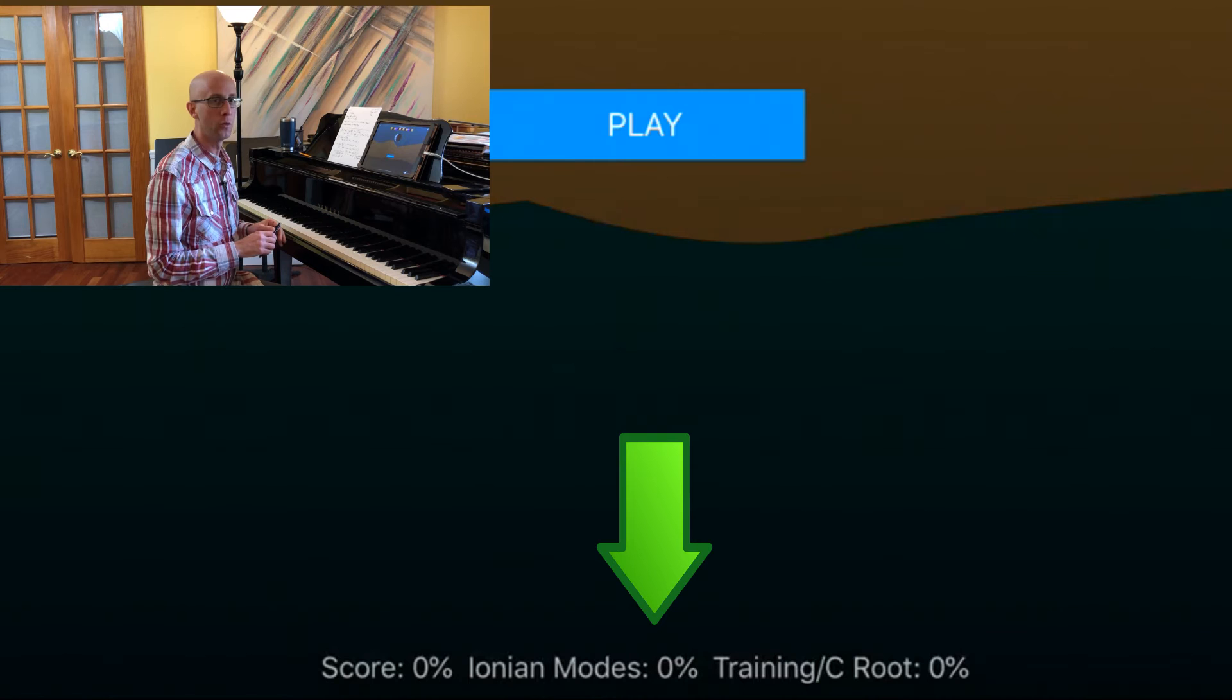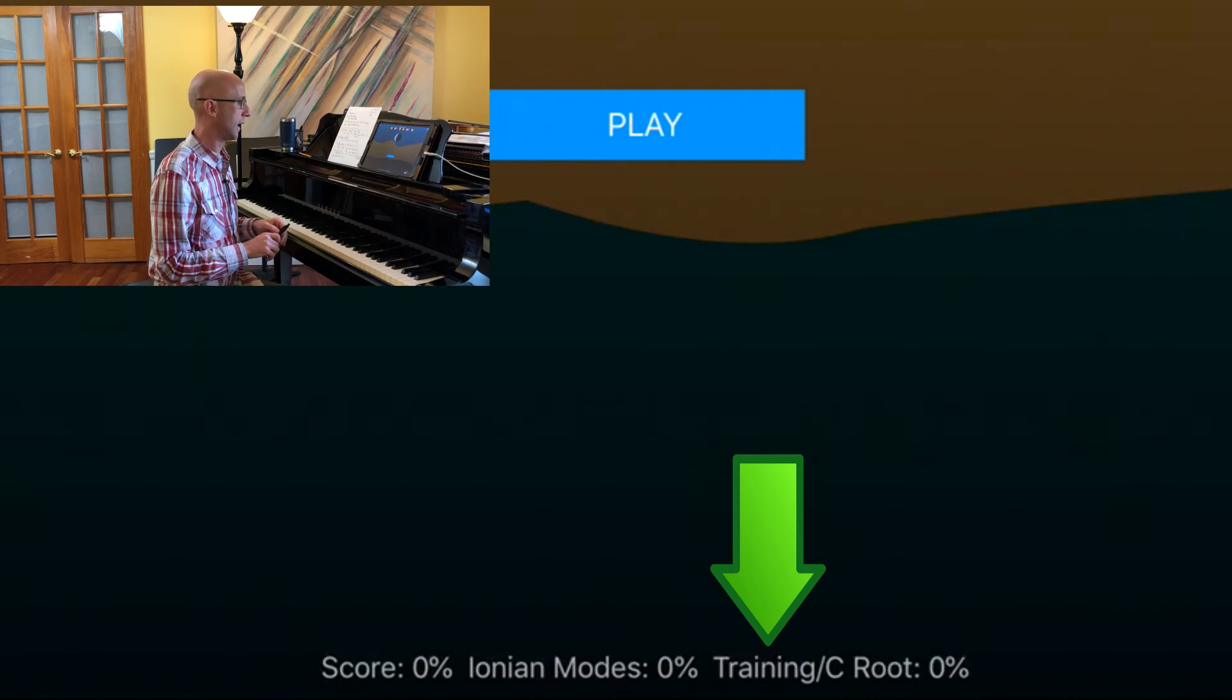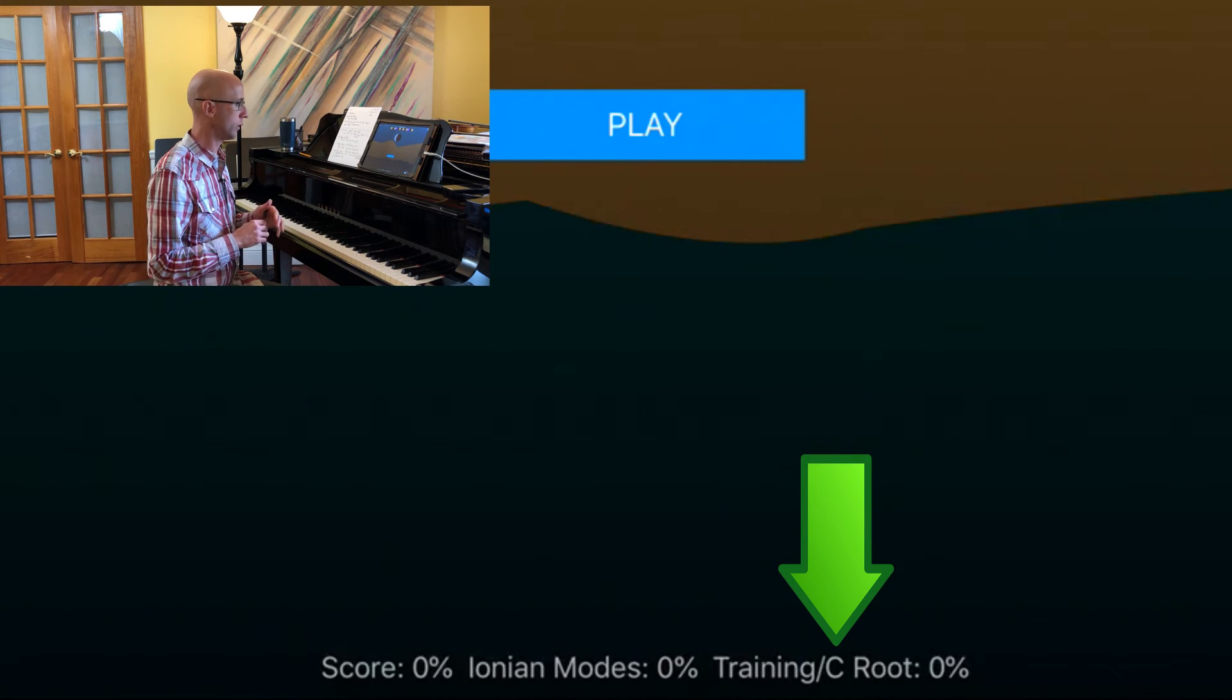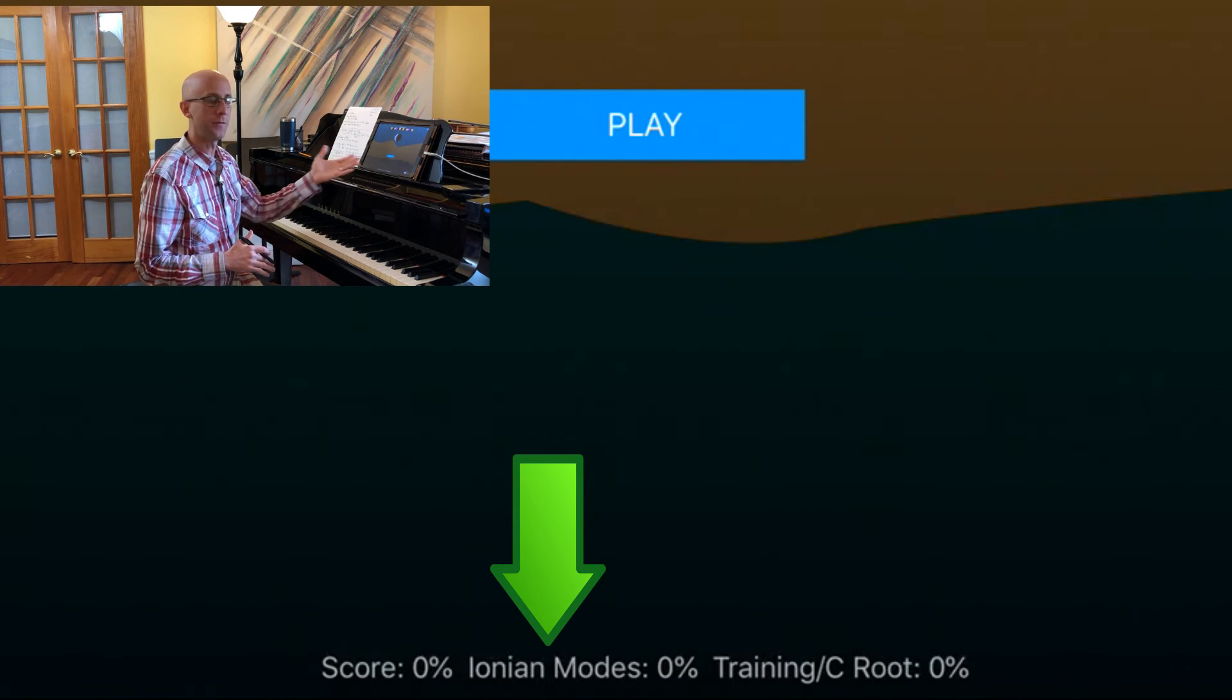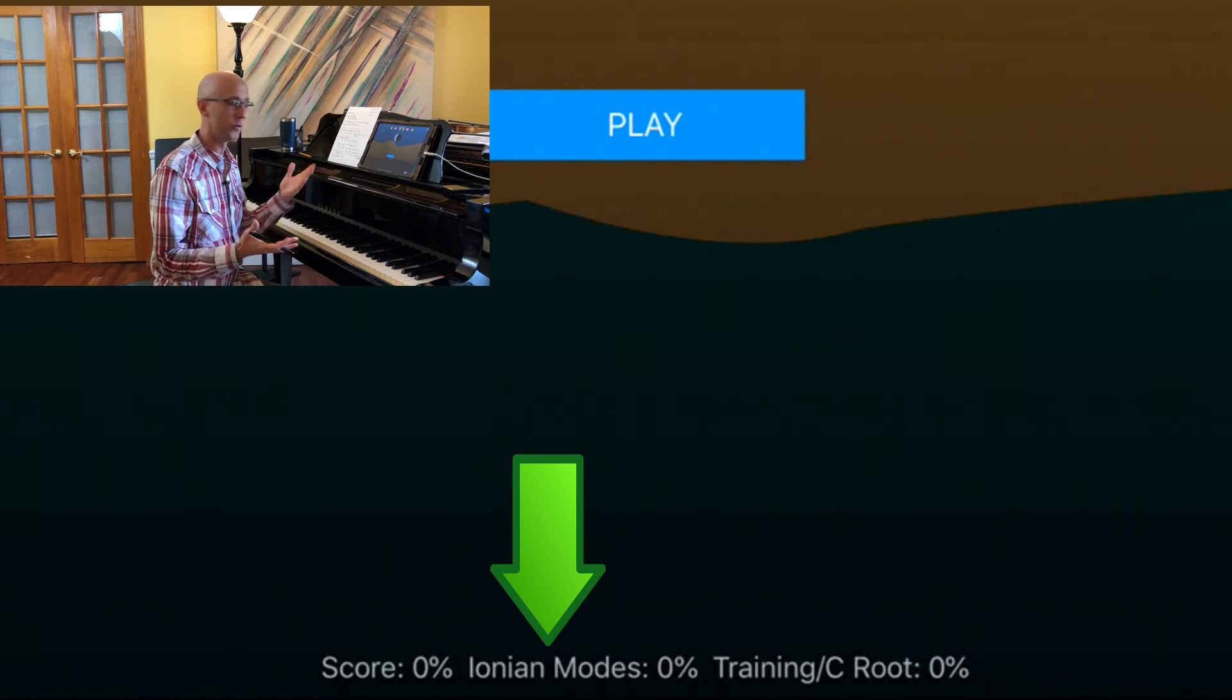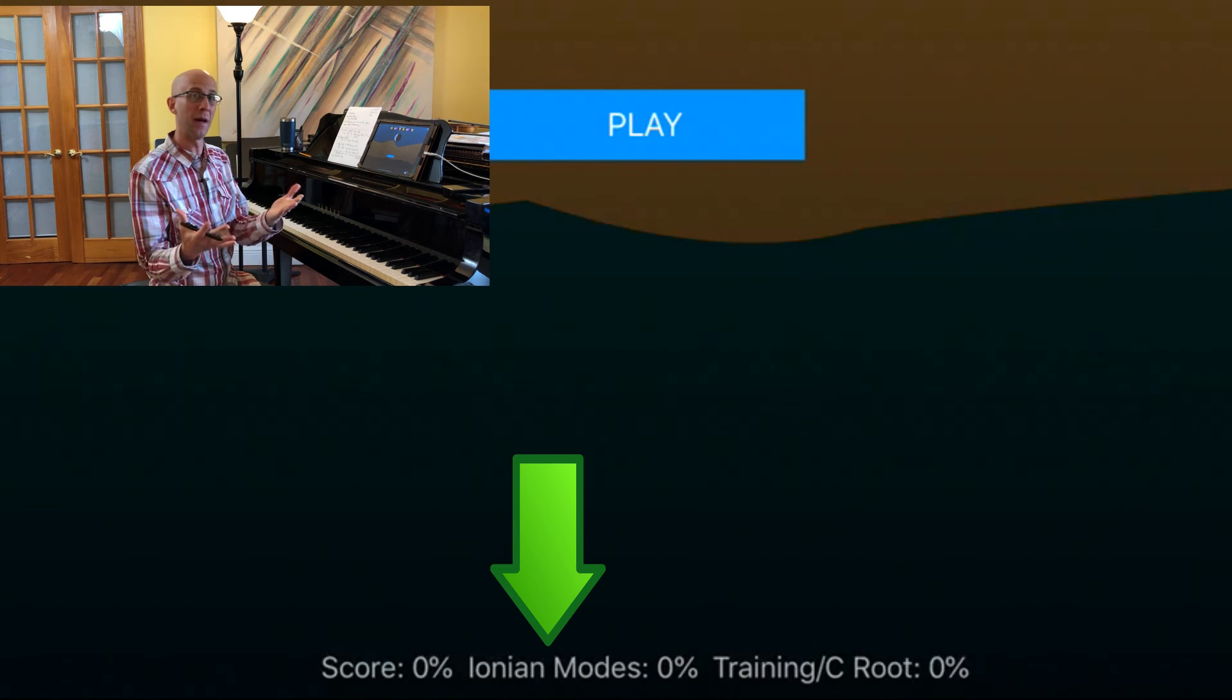You can see at the bottom of the screen, Polytonus 3 is telling you information about where you're at within your current level. Right now we're in training, and our root is C. That will change as you level up. The keys will randomize, the melodies will become more complex, less linear. To the left of that, the score with regard to Ionian modes and where I am in that level of Ionian modes, as opposed to harmonic minor or melodic minor modes.